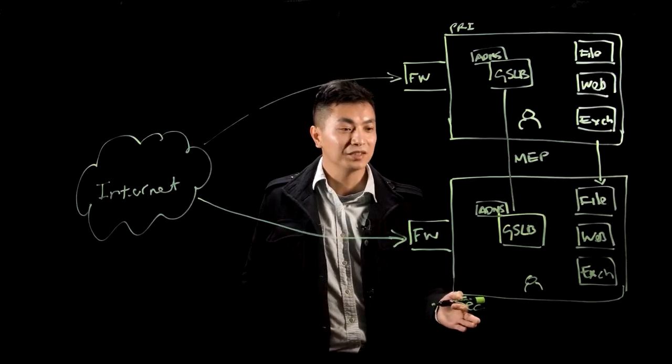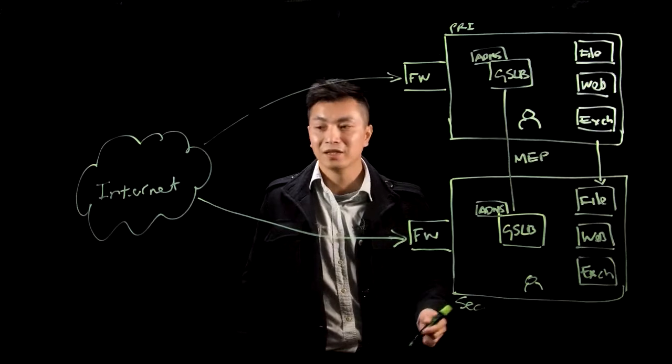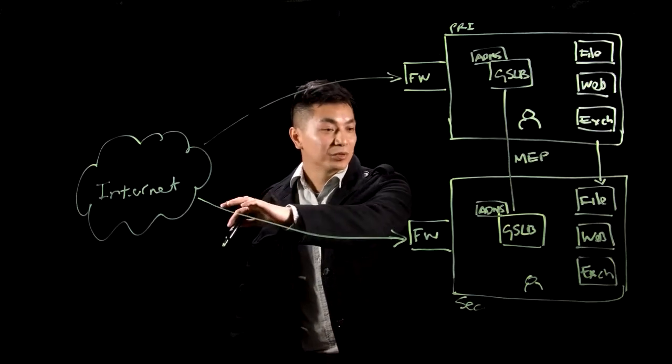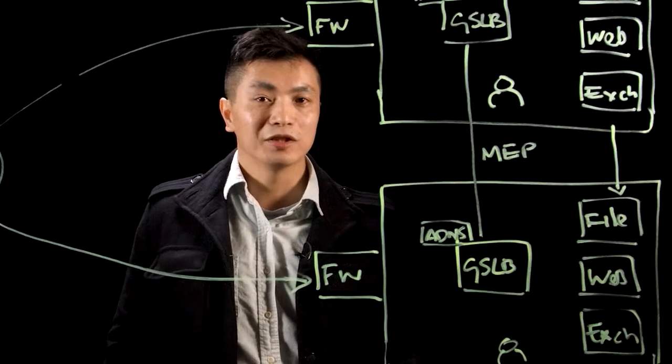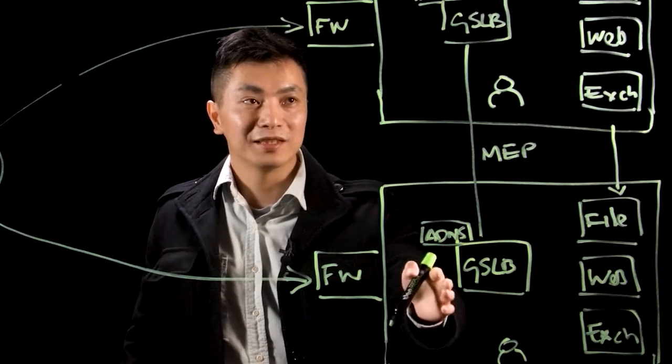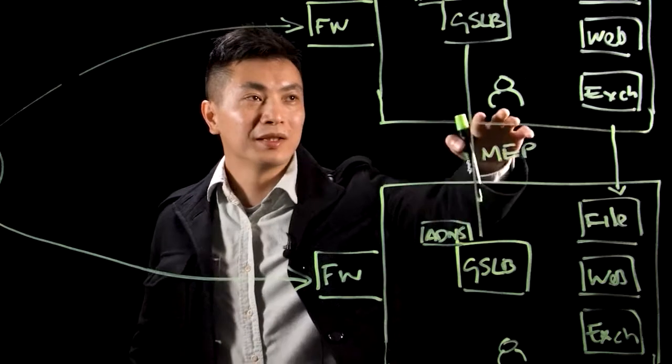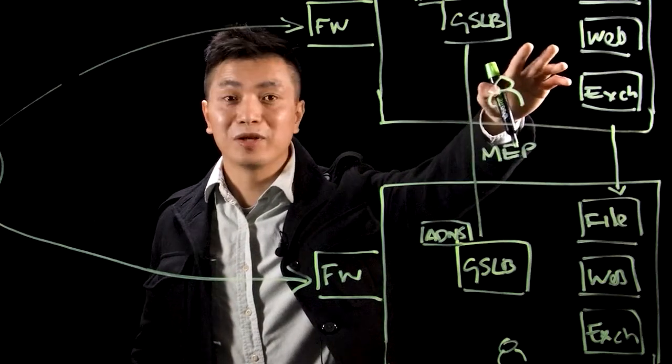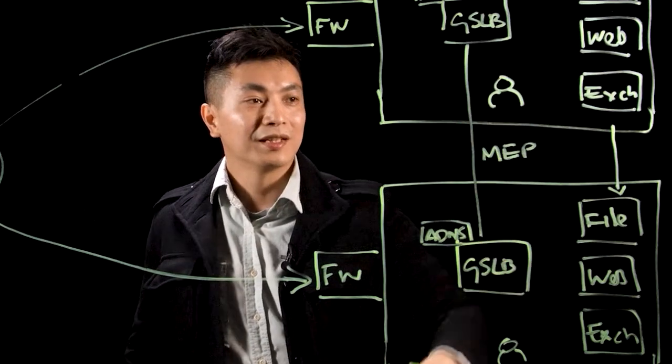GSLB essentially takes over name resolution duties from our ISP internet service providers. As name resolution is now controlled internally on our GSLB setup, we have the capacity to direct users to the backend file service, either in a primary or secondary site as we see fit.